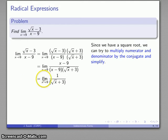And let's check it out. As x gets close to 9, 1 over square root of x plus 3 gets close to something we can actually evaluate: 1 over square root of 9 plus 3, or 1 sixth.